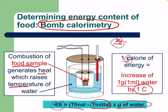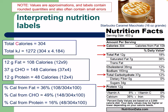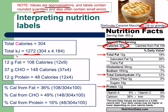You then have to calculate based on the quantity you're actually going to eat. As a real-world example, here's a Starbucks Caramel Macchiato (Grande). Keep in mind these values are approximations — they contain rounded quantities and sometimes small errors. Total calories: 304. Converting to kilojoules: 304 times 4.18 equals 1,272 kJ. We are using uppercase Calories here.